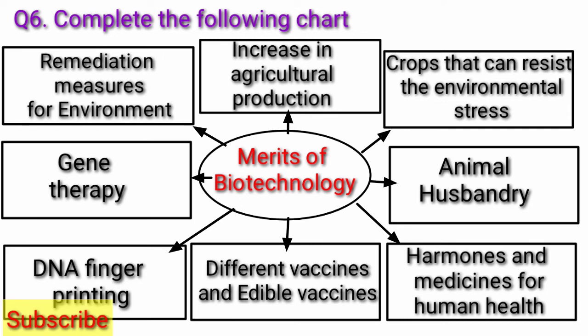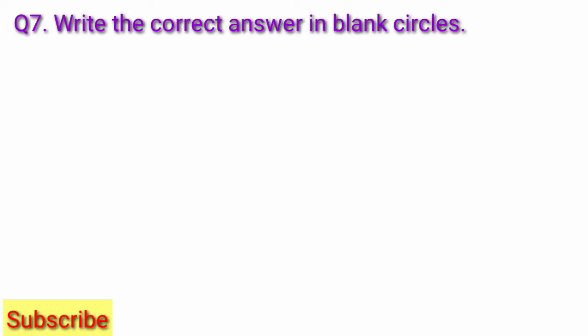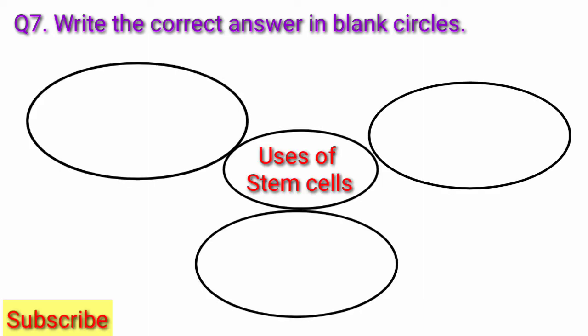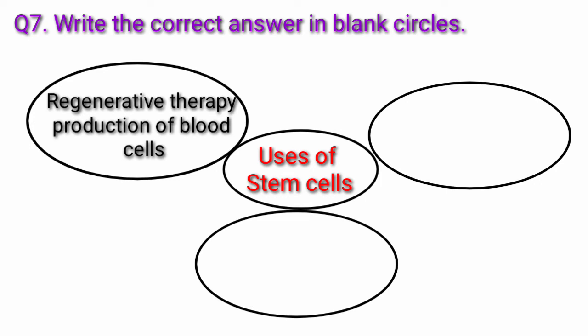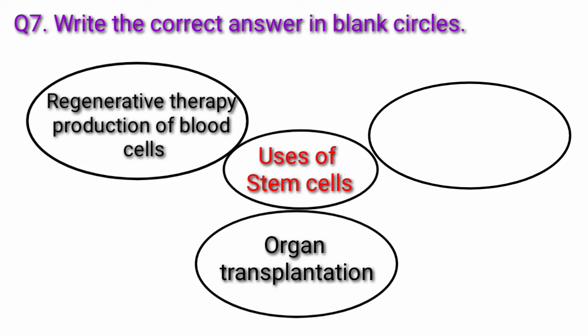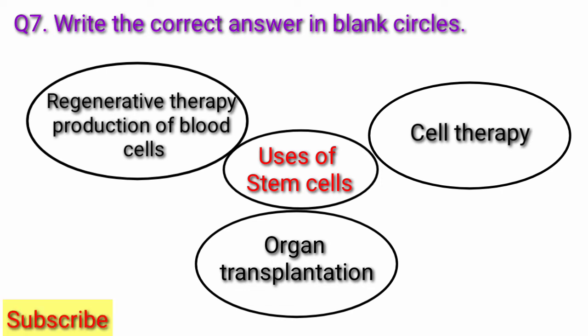Question 7: Write the correct answer in blank boxes — Use of Stem Cells. Answer: Uses of stem cells include regenerative therapy for production of blood cells, organ transplantation, and cell therapy.